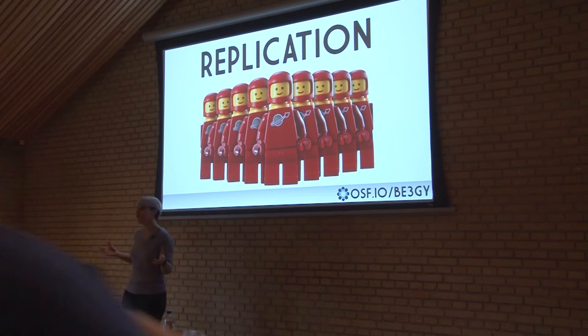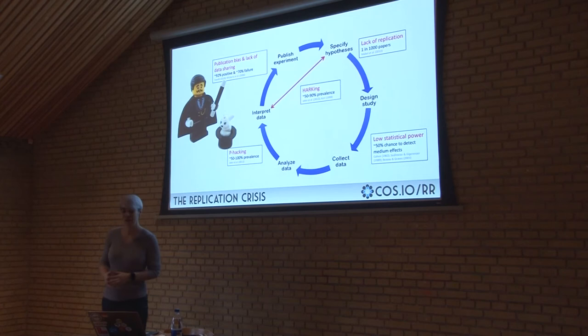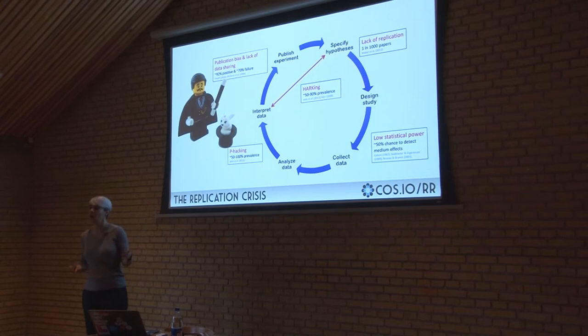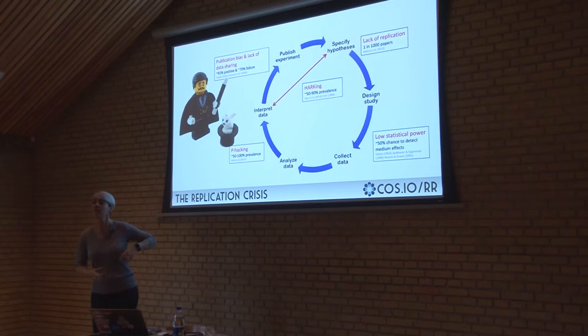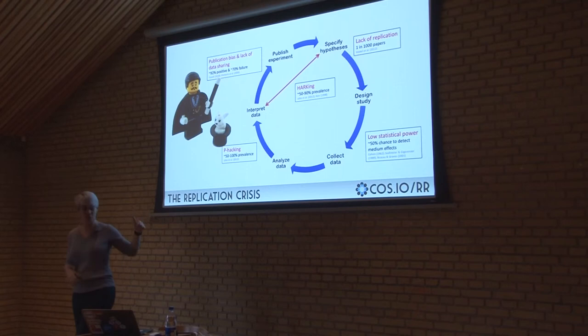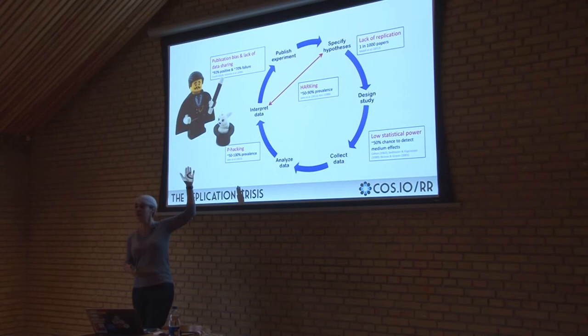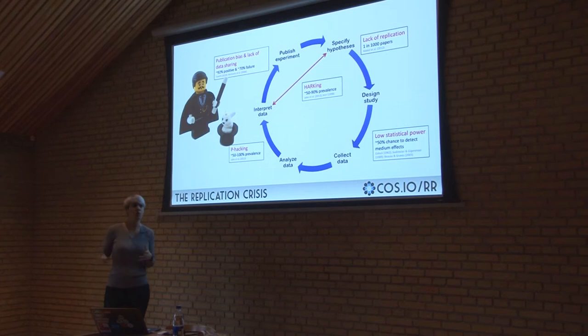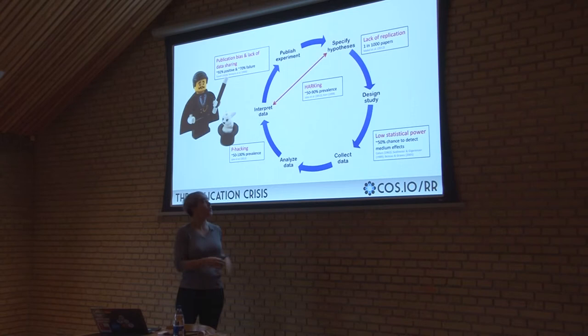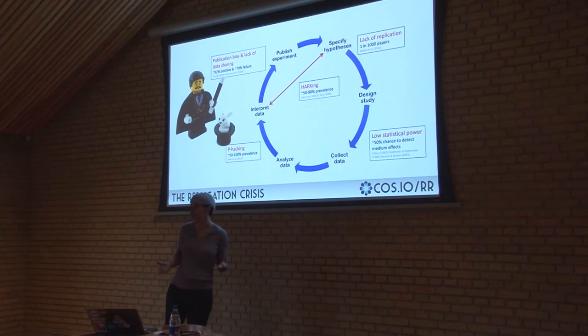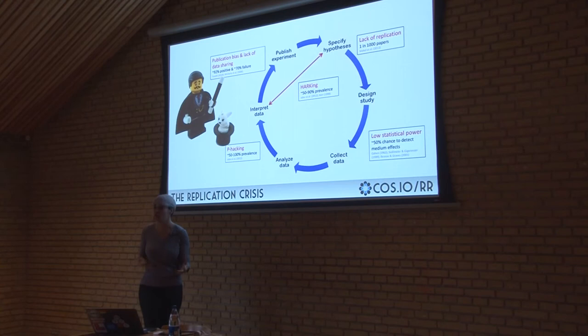First, replication. We talked a lot yesterday about replication and its importance. I really like this slide that Chris Chambers tends to present. The hypothetical-deductive model — this idealized view of how we do research — can really be derailed by a number of questionable research practices. Many studies we run have low statistical power, with only a 50% chance to detect medium effects, and really poor power to detect the kinds of effects you tend to see in social or cognitive psychology.